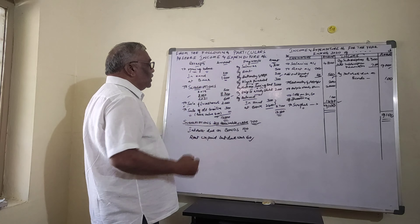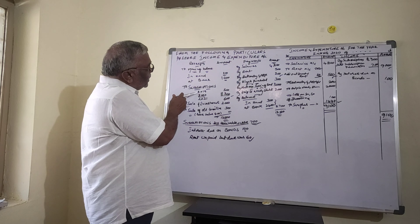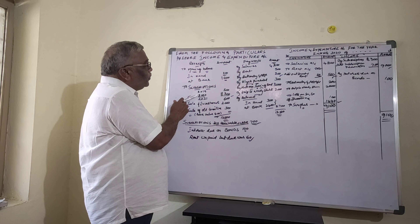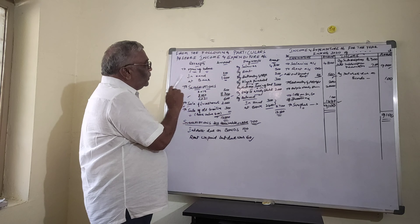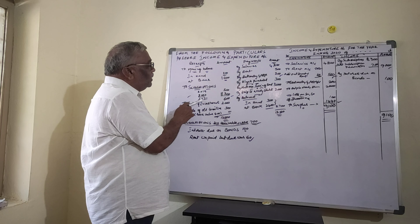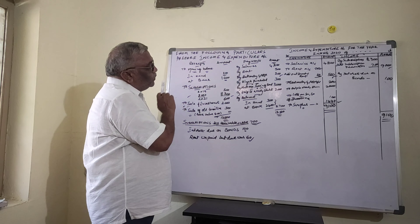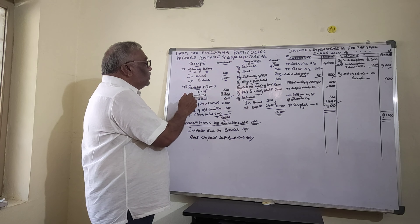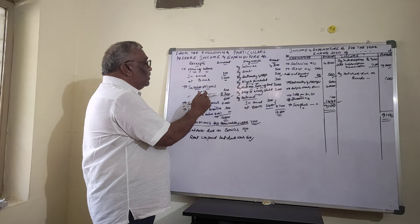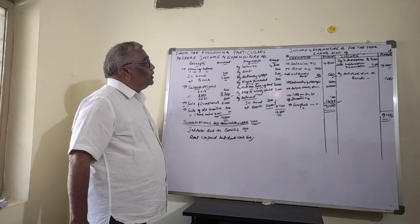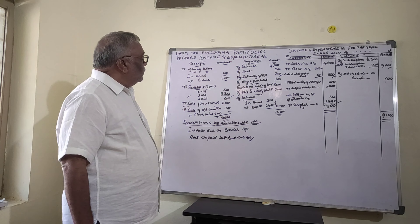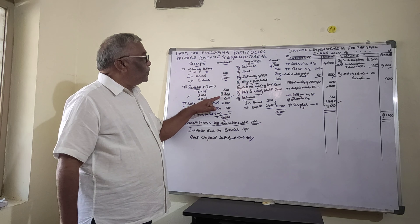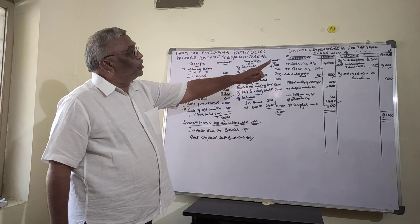Next is subscriptions. Subscriptions received: for the year 2019 — $500, for the year 2020 — $8,300, and for the year 2021 — $600. Since we need only the year 2020 figures, the subscription amount for 2020 is $8,300.